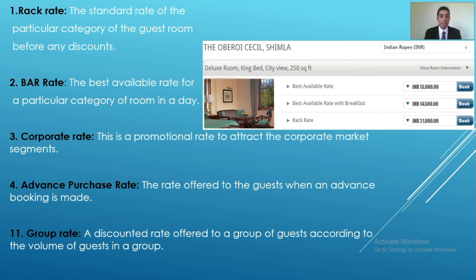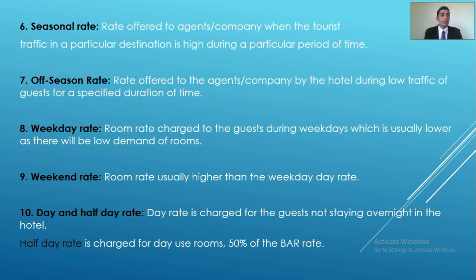Group rate is a discounted rate offered to a particular group according to the volume of guests in the group. If they have more guests in a group, they will get more discounts or a lower rate. If they have fewer members in the group, they will get a higher rate.